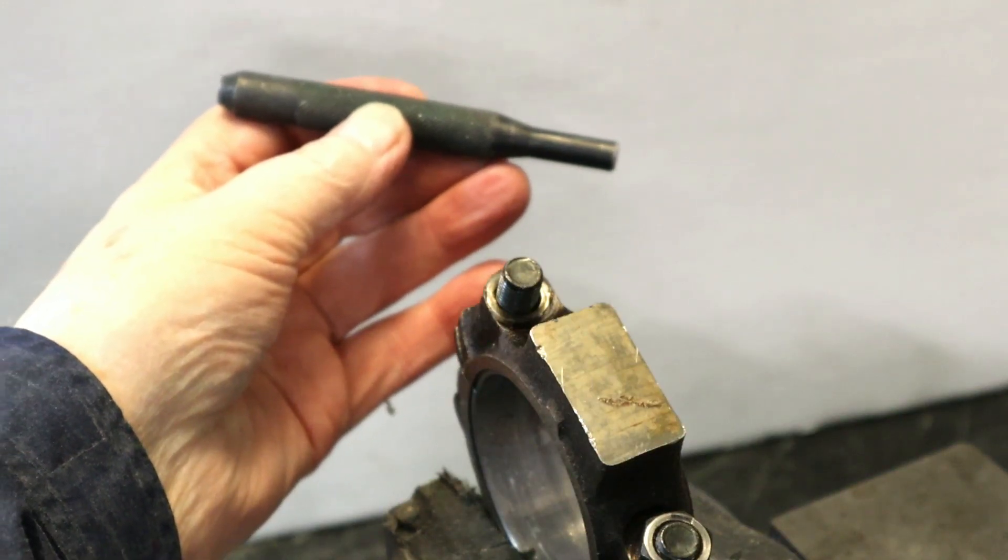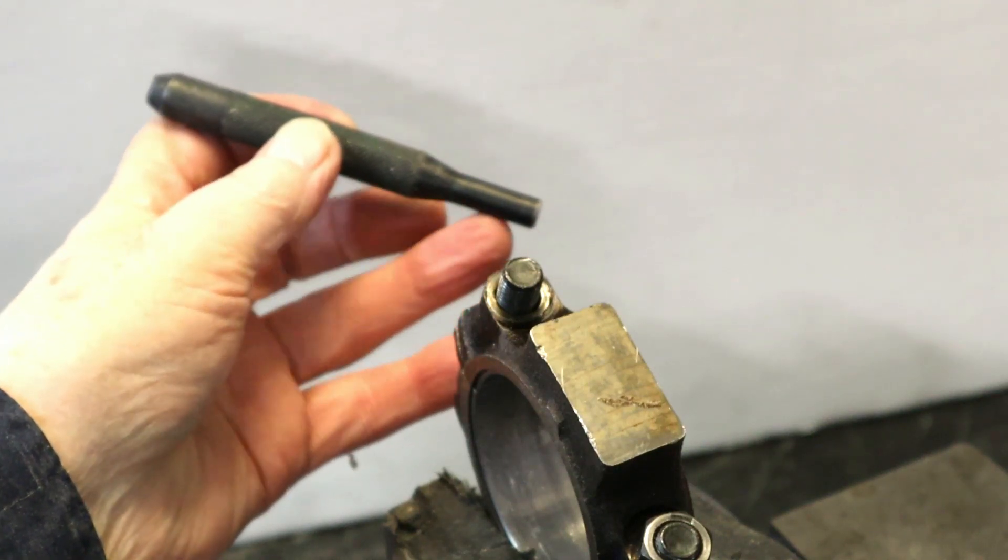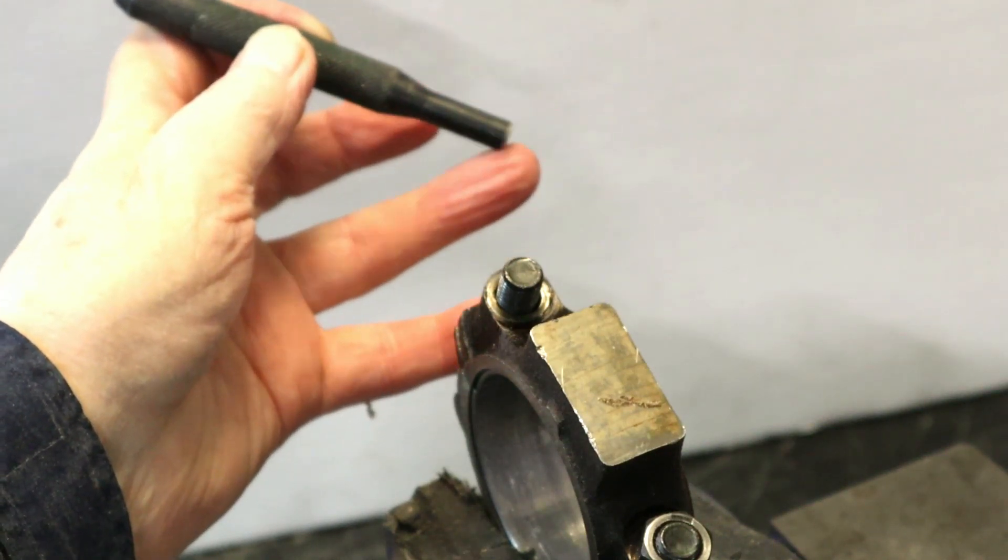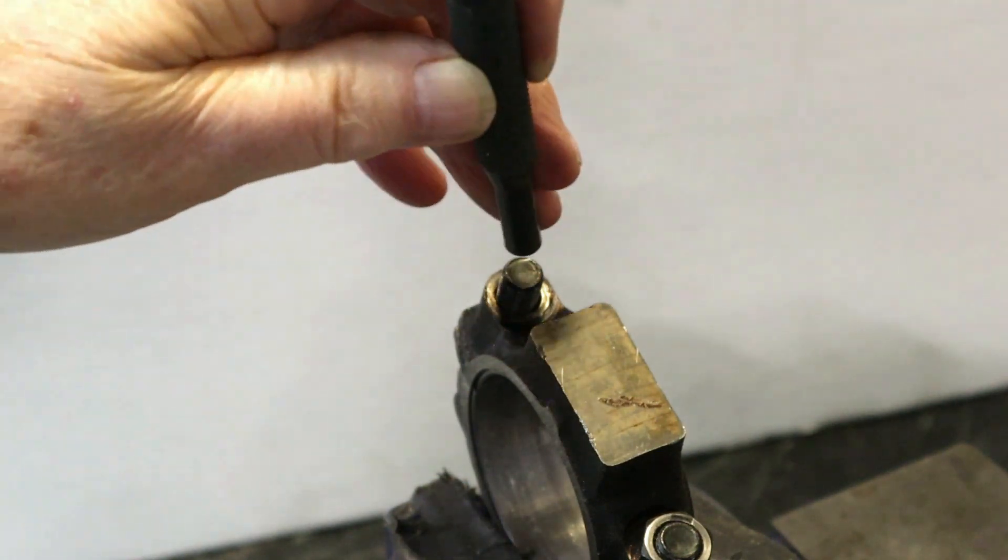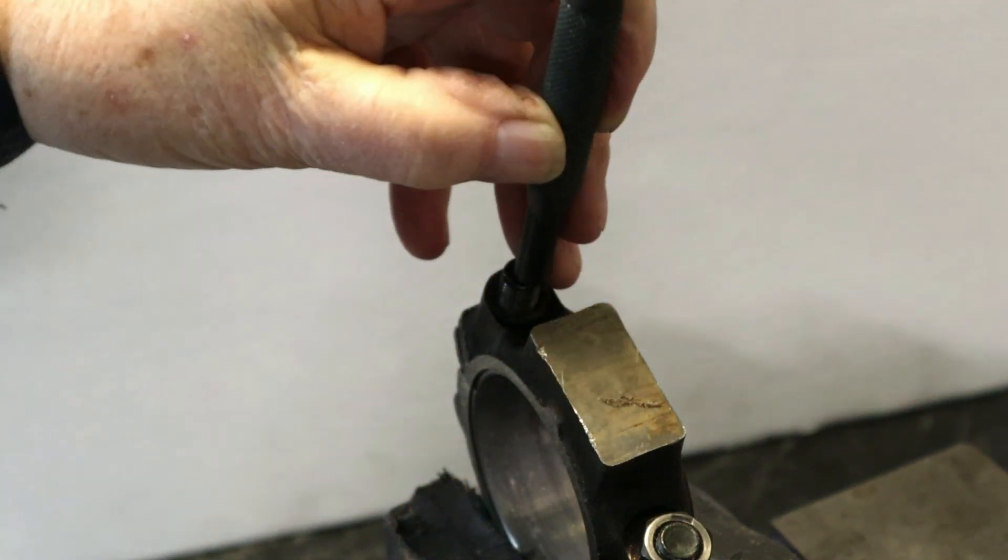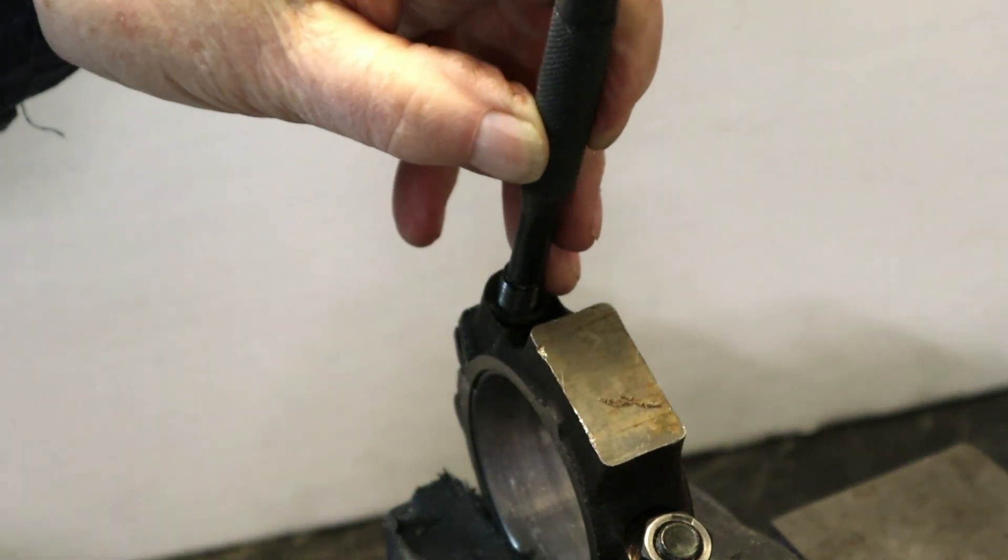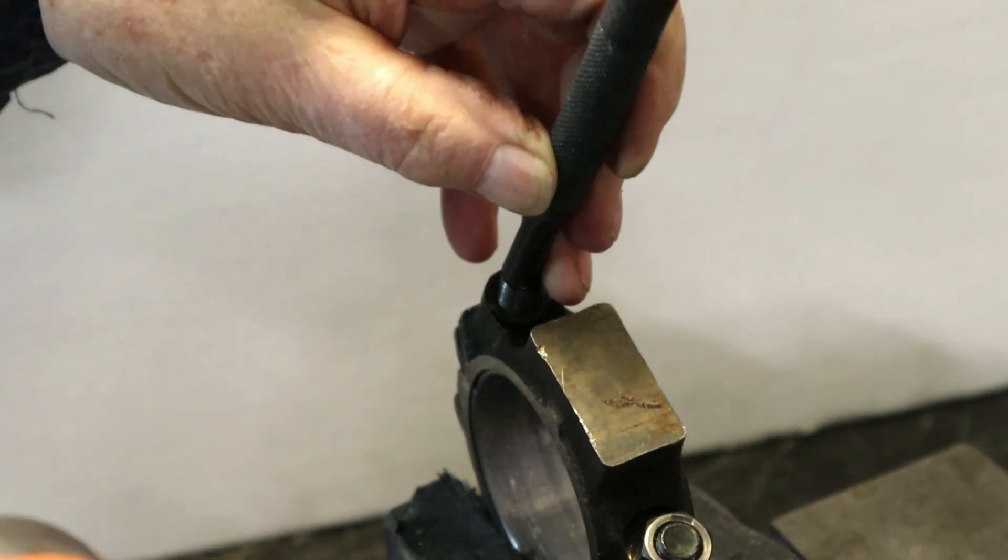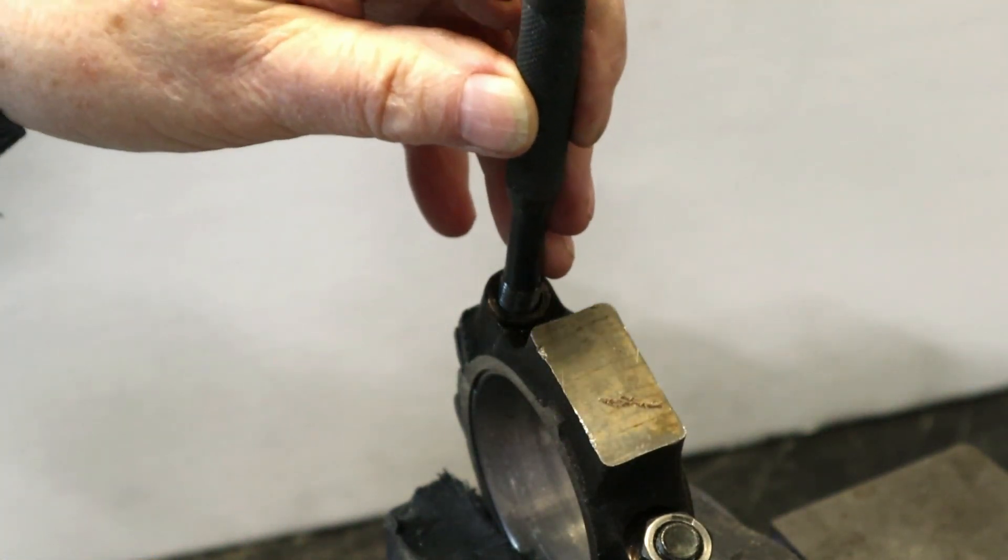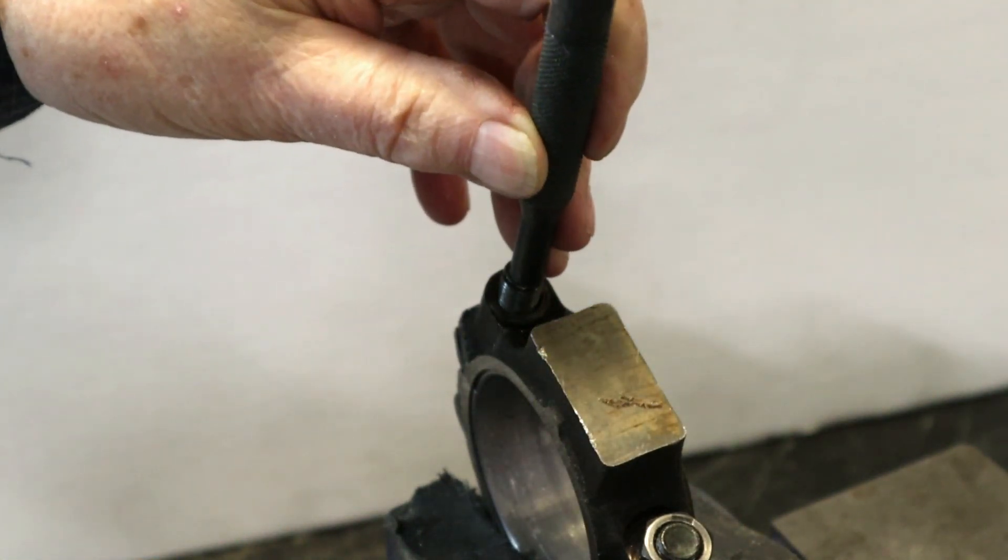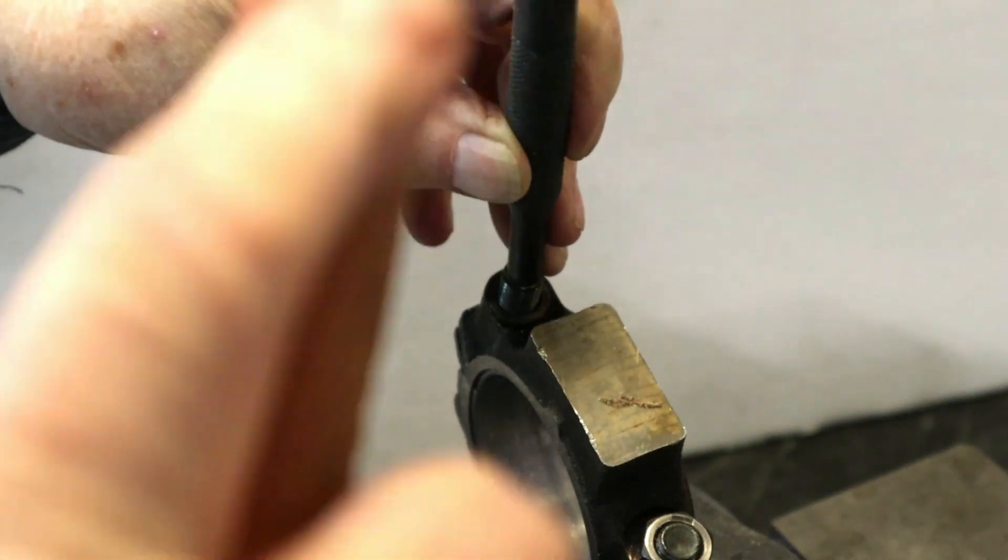Using a punch like this, with any sharp edges taken off here, we now carefully remove this bolt. Now, remember, we are going to use them. So, we want a punch that is smaller than the thread. And we carefully knock it out, like so.